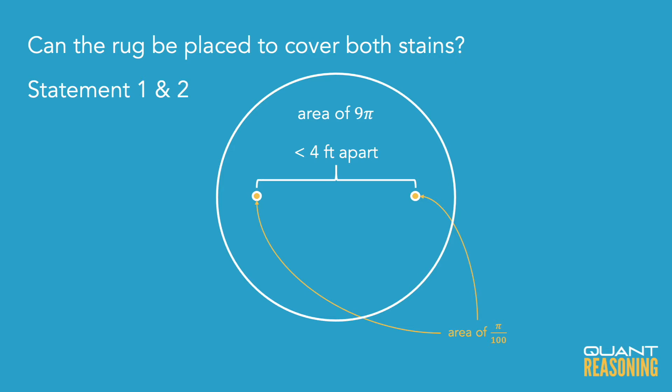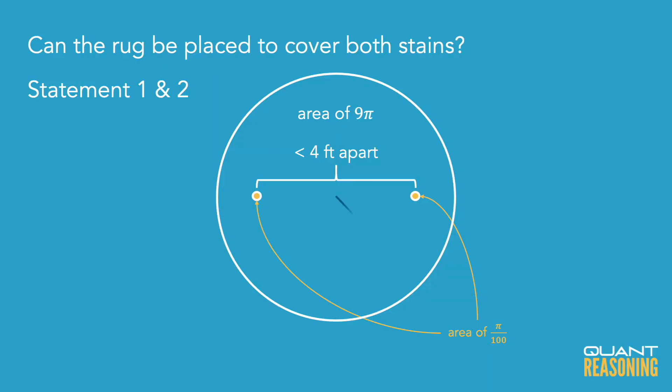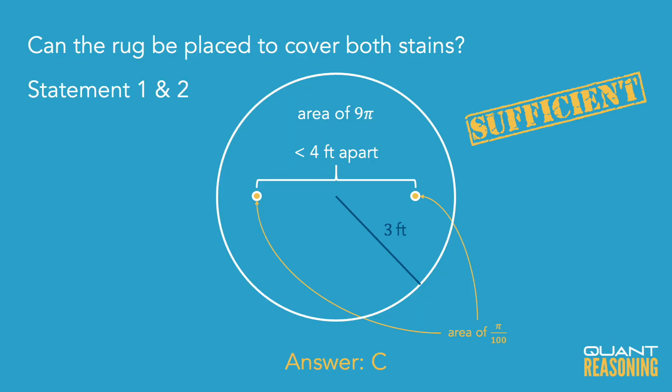The rug itself is a circle, and we can infer that the radius of the rug is 3 feet, because the area of a circle is π times the radius squared, and the area is 9π. That makes the diameter of the rug 6 feet. We know the centers of the stains are less than 4 feet apart, and the stains themselves are really tiny. There's no need to compute the exact total possible distance from one end of one stain to the other end of the other stain — even adding a radius on each side, we're still way under the 6-foot diameter of the rug. Therefore we get a definitive yes, and the answer is C.